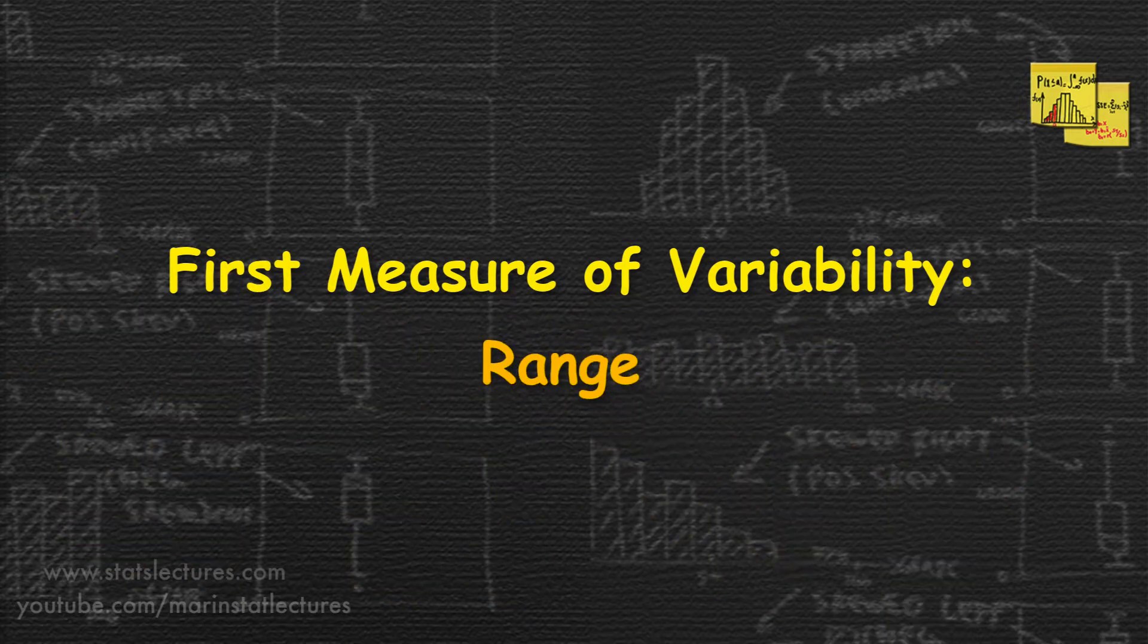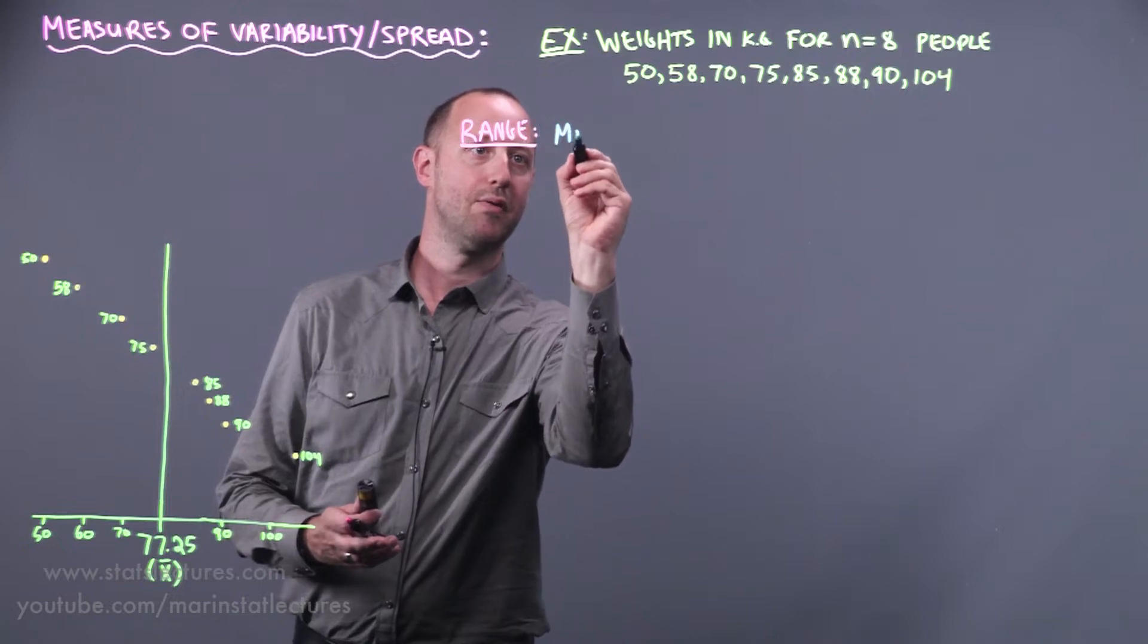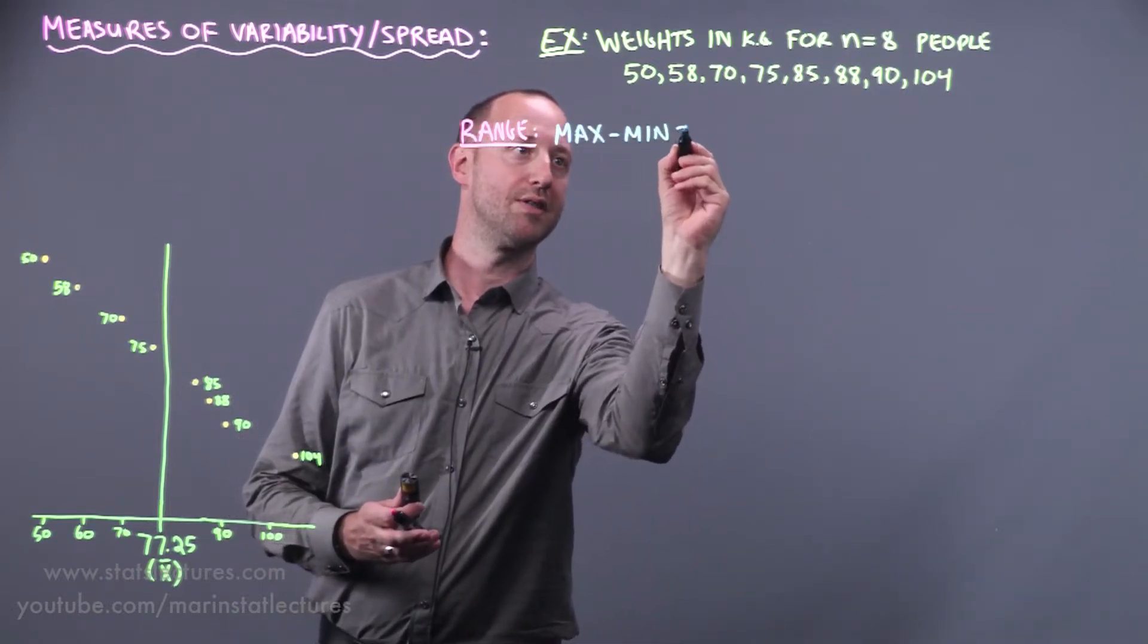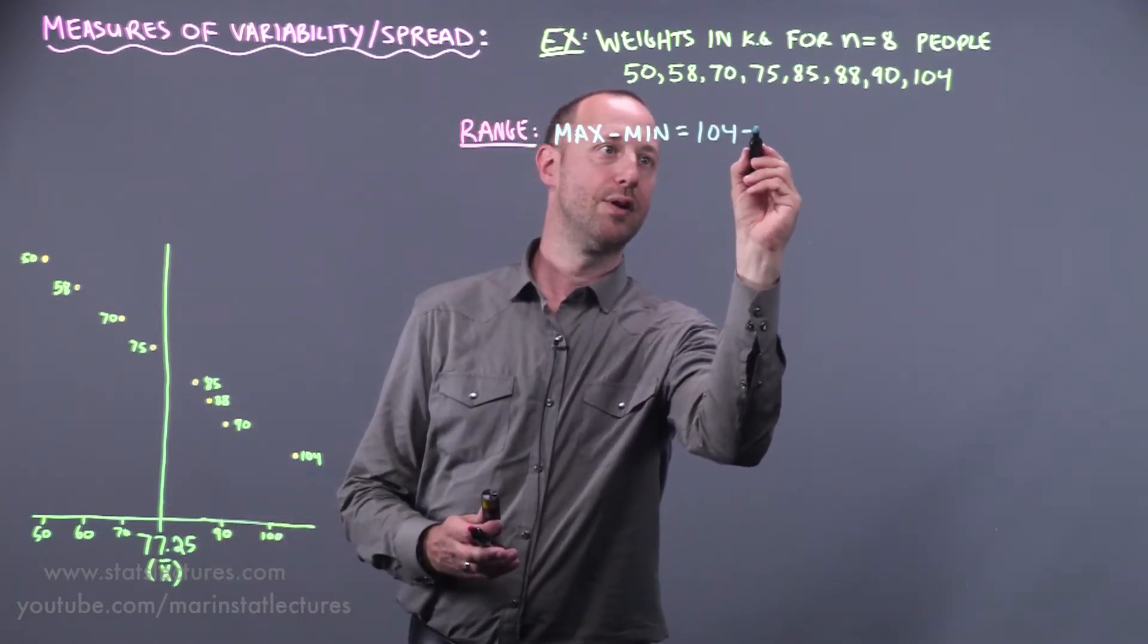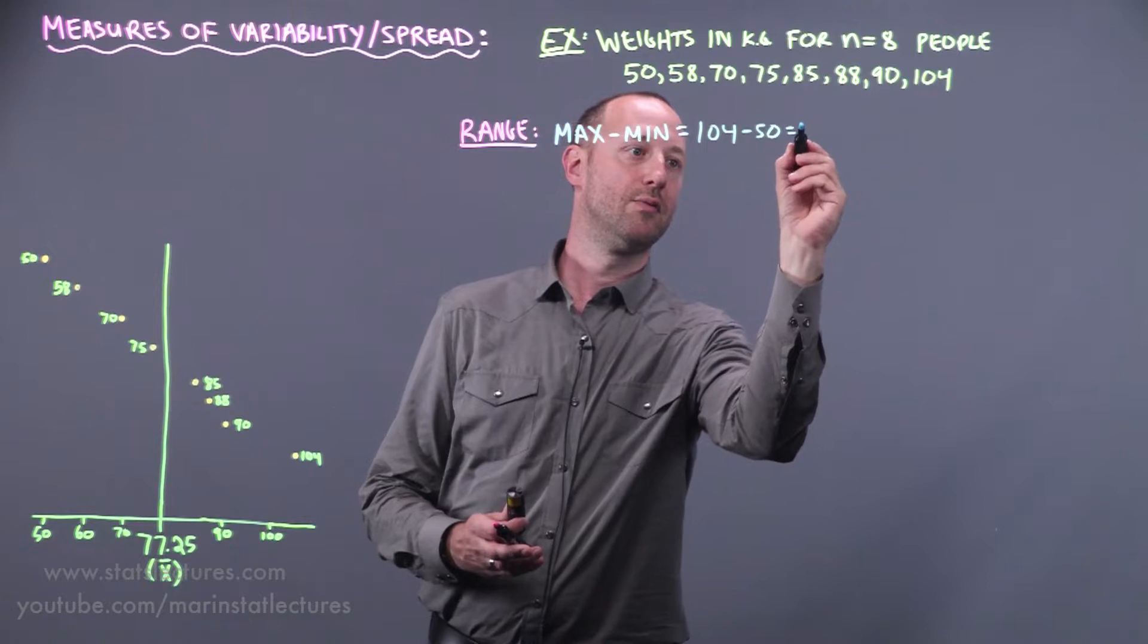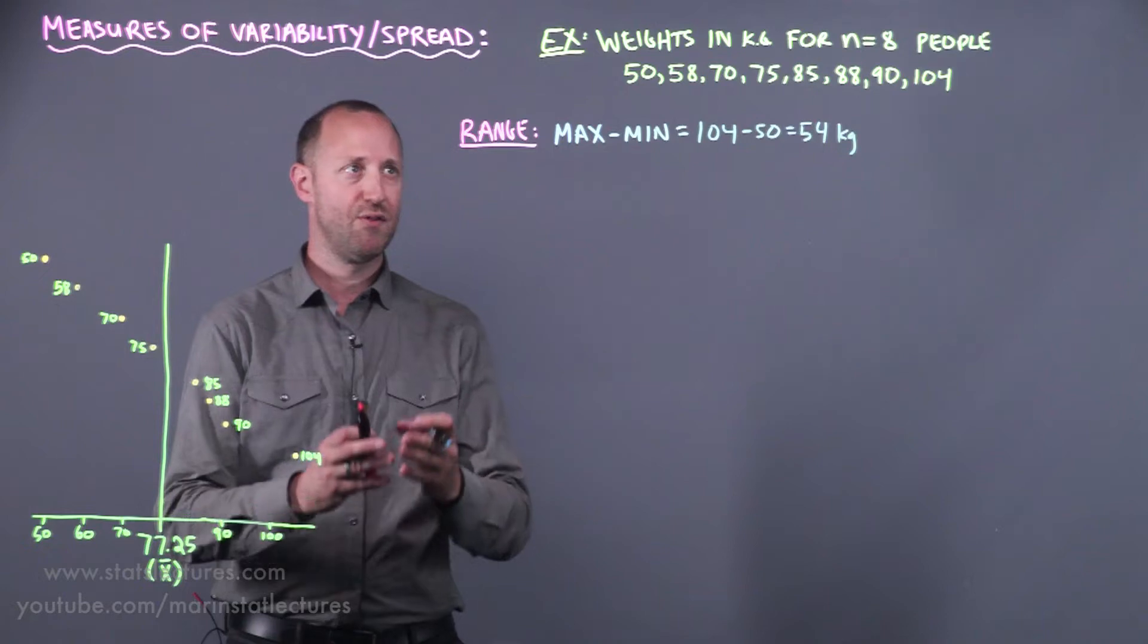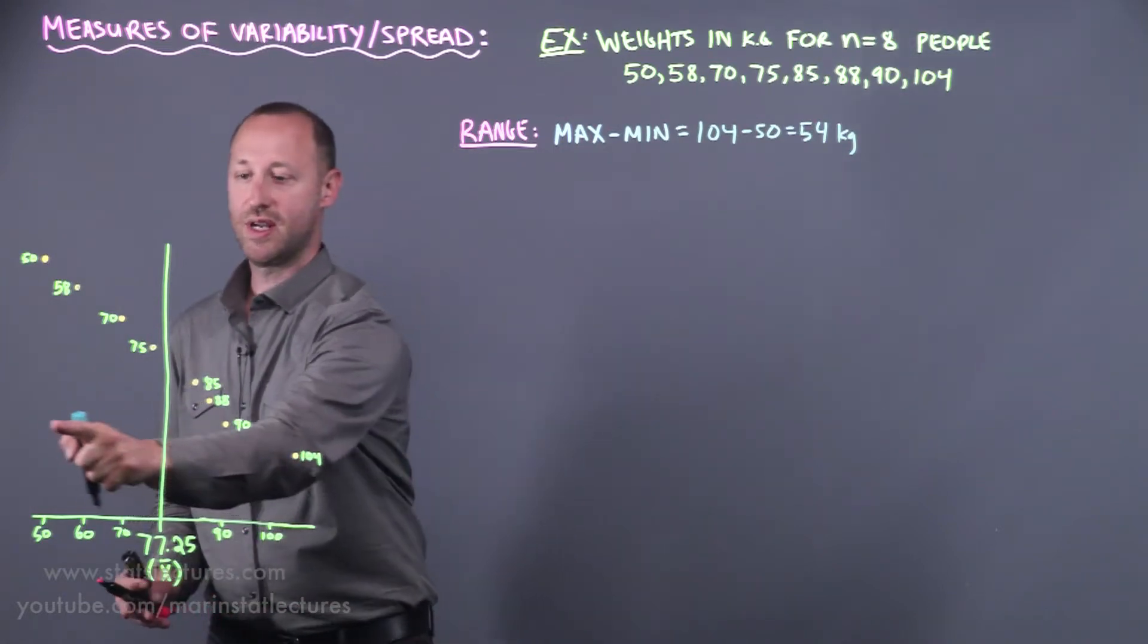The first and most simplest measure is the range. The range is just the maximum or largest observation minus the minimum or the smallest. So in this example it's 104 minus 50 which comes out to be 54 kilograms. The range gives us an idea of the full span of the data.